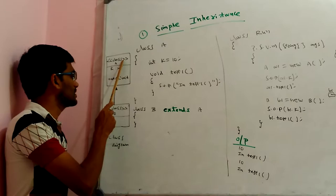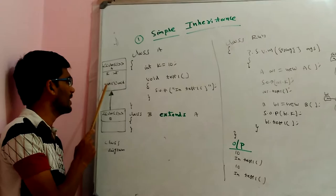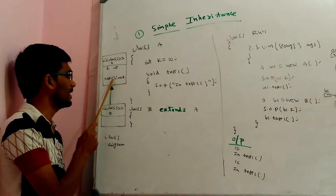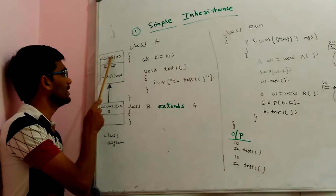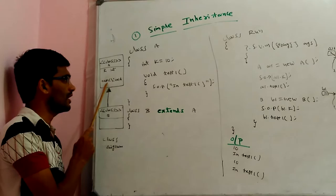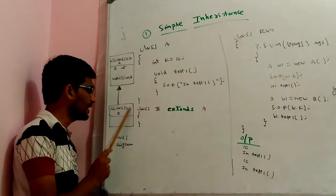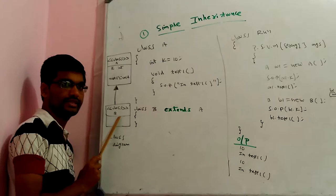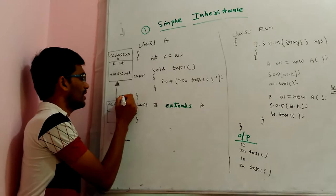In the class diagram, we have class A and class B. In class A there is one variable called K of type int, and a method called test1 which returns void. Class A is the superclass, whereas class B is the subclass. Class B has no variables and no methods — it simply inherits from class A.